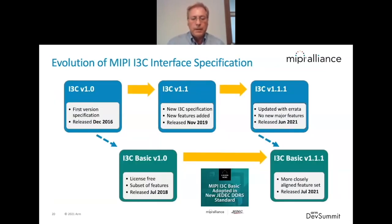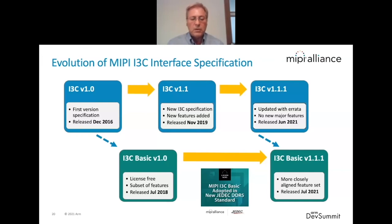An important consideration is that I3C was developed with I2C compatibility in mind, since there are billions of I2C devices in the market. It was very important that the I3C bus could accommodate I2C devices for developing future products. The first I3C specification was issued at the end of 2016, followed by version 1.1 at the end of 2019. This summer, a maintenance version 1.1.01 was released — a major rearrangement to improve readability of the nearly 500-page specification, also with a few additional features. The I3C Basic version, open to any company complying with MIPI Alliance IPR rules, was released in 2018, with an updated version 1.1.2.1 released this summer as well.